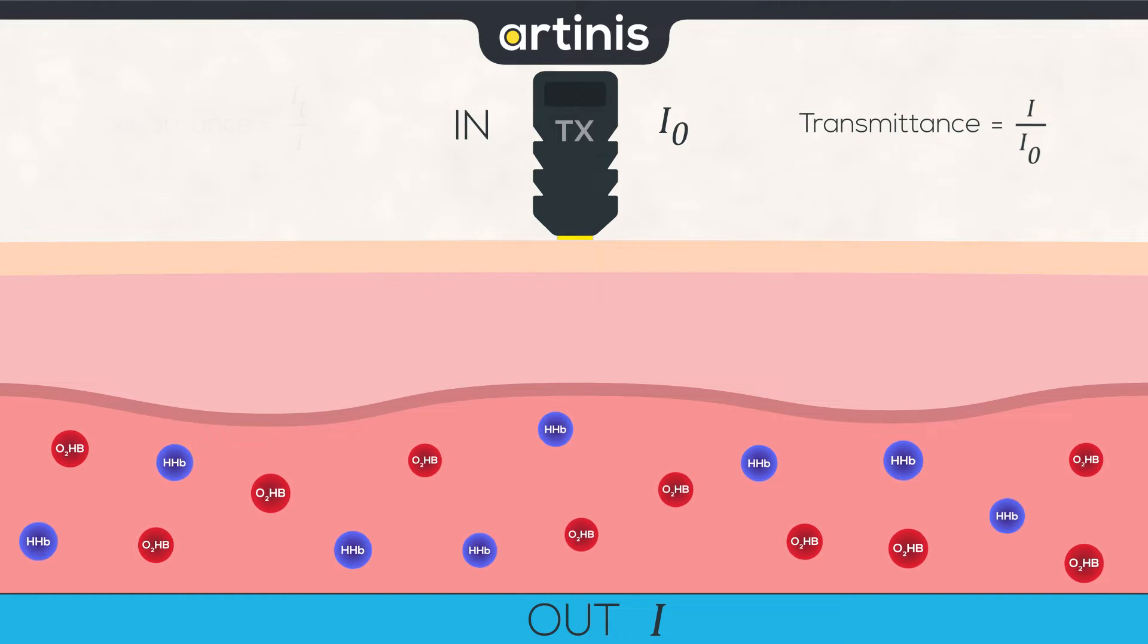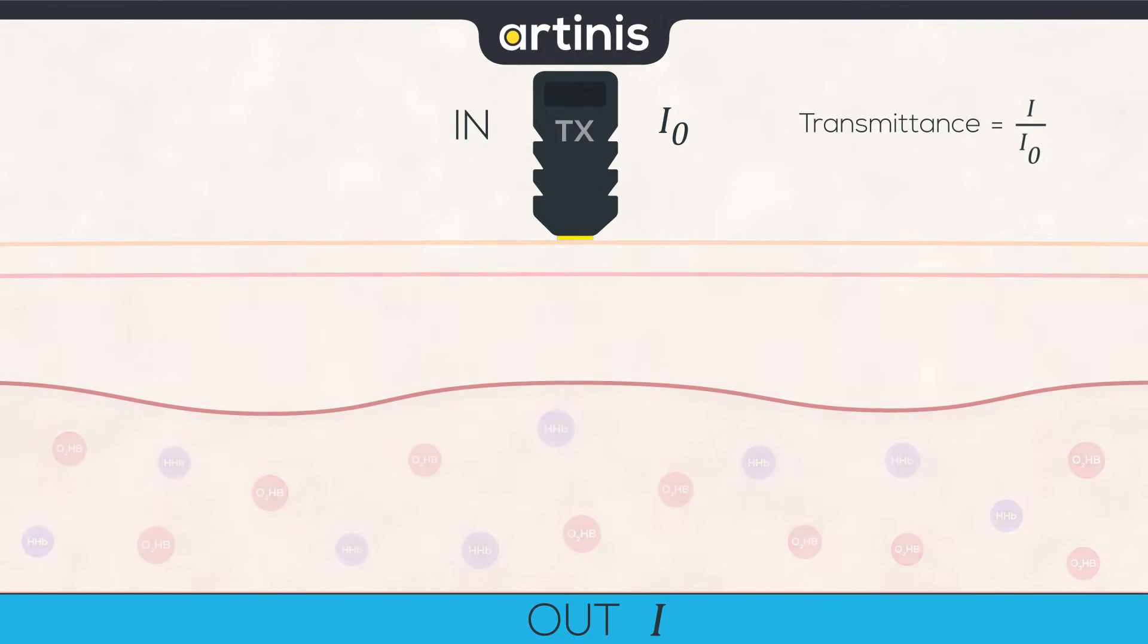To give you an example, first imagine that we have a fully transparent tissue. In this case, the amount of ingoing light is equal to the amount of outgoing light. What does this mean concretely? That if you shine a light on it, all of the light will be able to go through. It will be 100% transmitted.